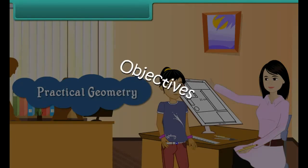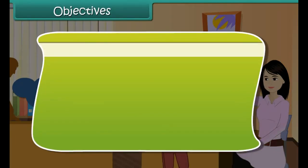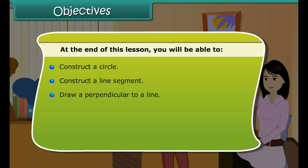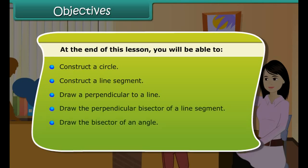Objectives. At the end of this lesson, you will be able to: construct a circle, construct a line segment, draw a perpendicular to a line, draw the perpendicular bisector of a line segment, draw the bisector of an angle, and construct angles.